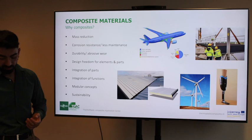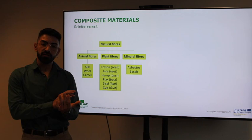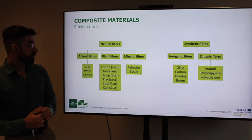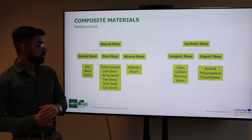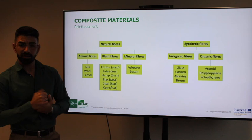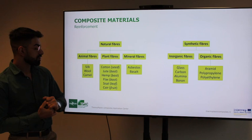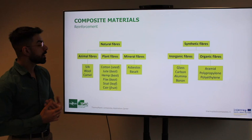Focusing on the reinforcement, we distinguish natural fibers and synthetic fibers. Natural fibers are defined according to their source: animal fibers such as silk, wool, and camel; plant fibers such as cotton, jute, hemp from the bast, and flax — one of the most used — as well as leaf and fruit fibers like sisal and coir; and mineral fibers like asbestos and basalt fibers.